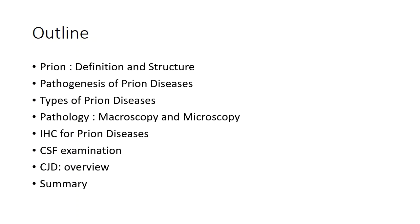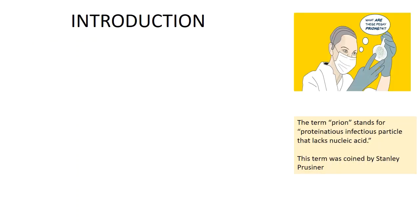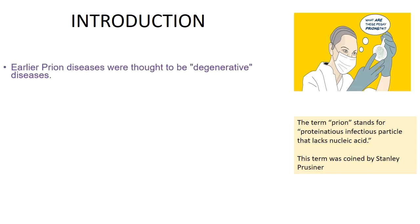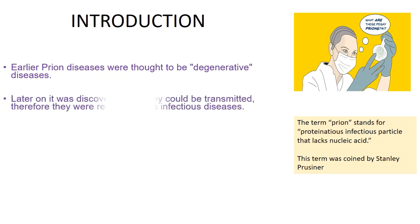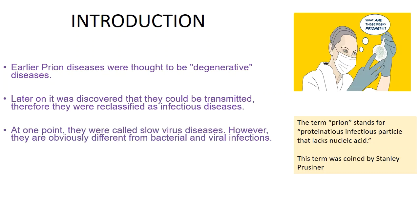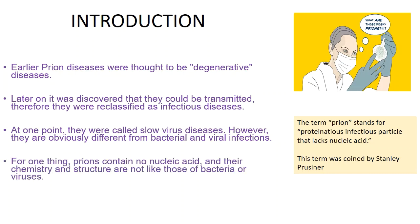What is a prion? A prion is a proteinaceous and infectious agent that does not contain any nucleic acid component, nor is it degradable by typical sterilization. The term prion stands for proteinaceous infectious particle that lacks any nucleic acid component. The term was coined by Stanley Prusiner. Earlier, prion diseases were thought to be degenerative diseases, but later they were found to be transmissible and reclassified as infectious diseases. At one point they were called slow virus diseases, like HIV. Importantly, prions contain no nucleic acids and do not elicit any inflammatory or immune reactions.